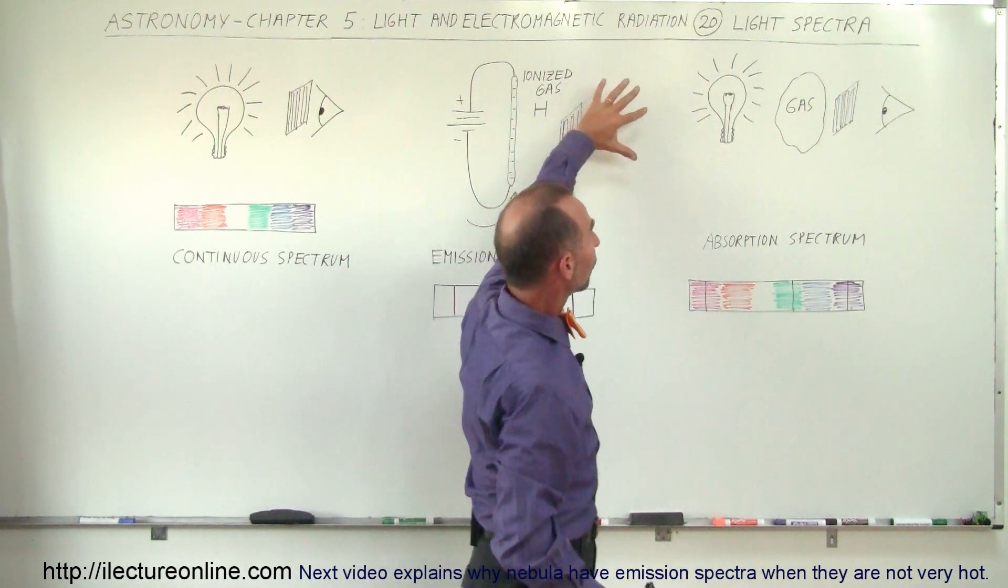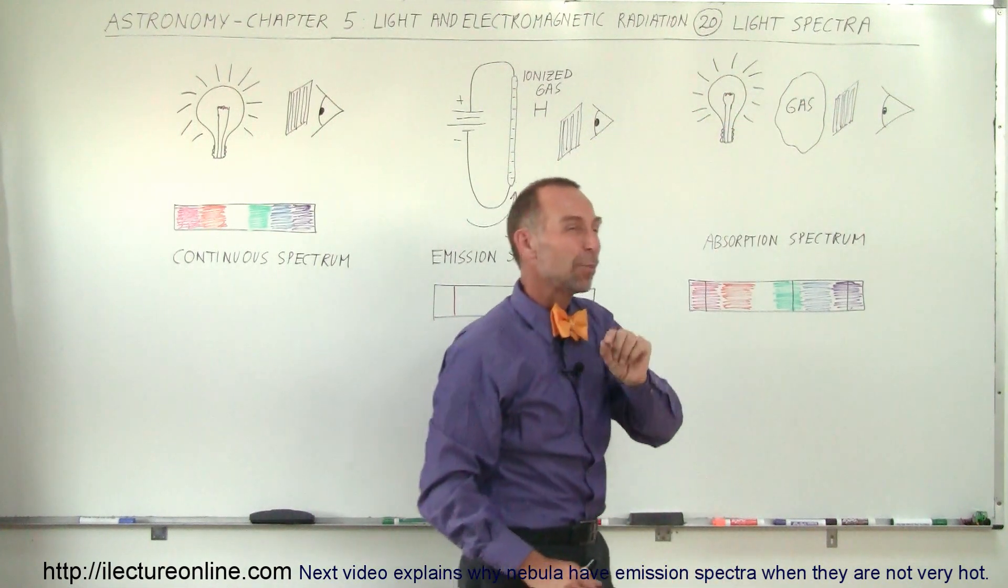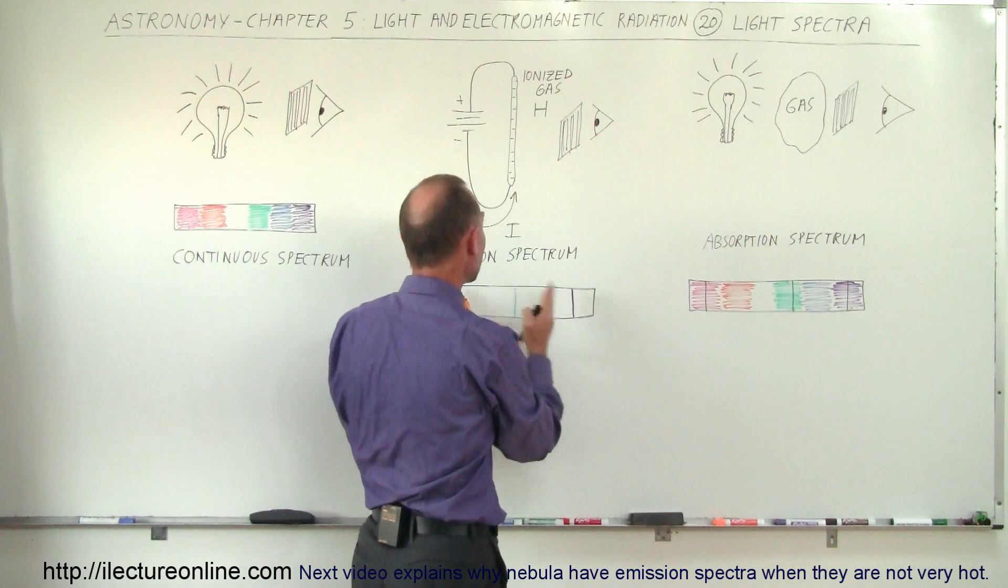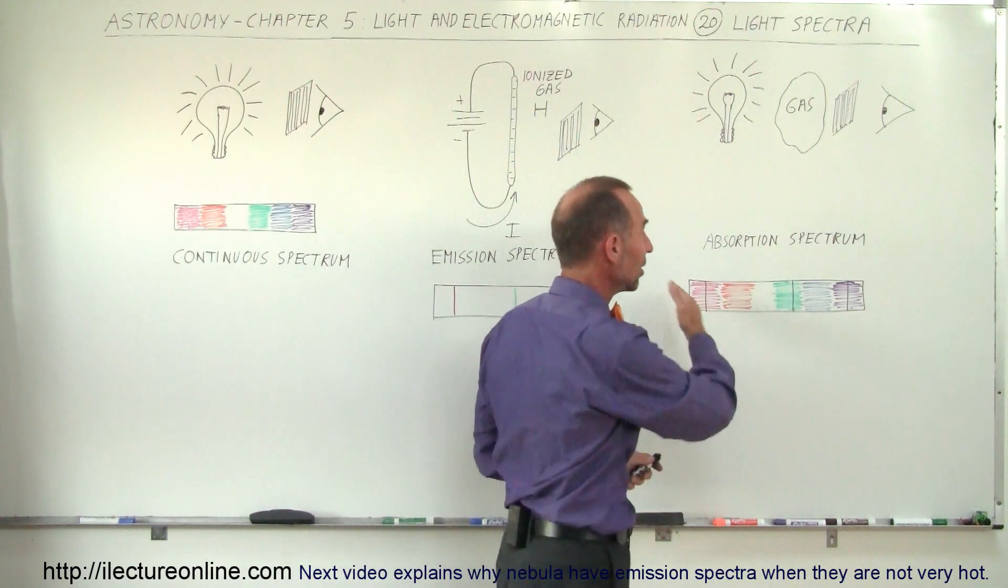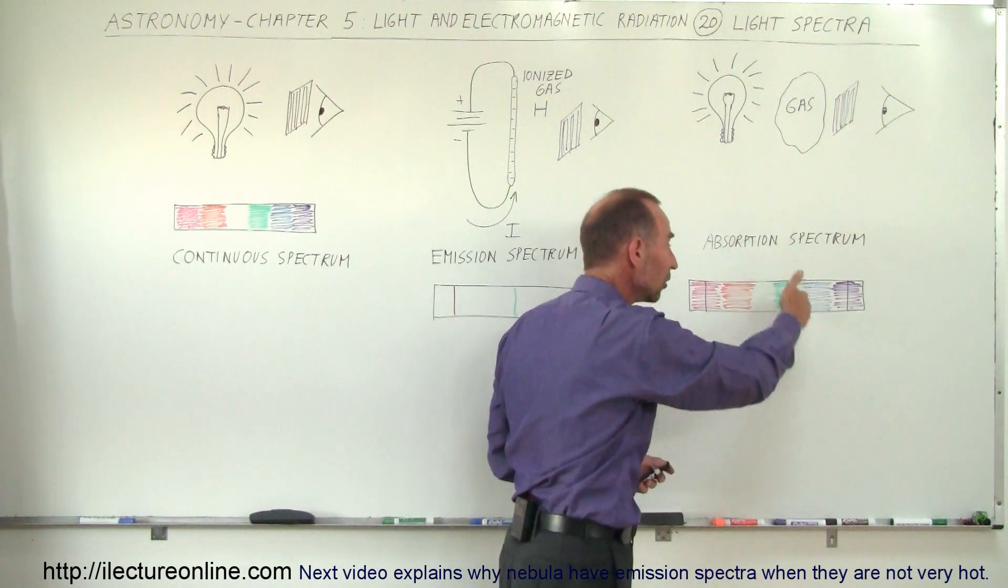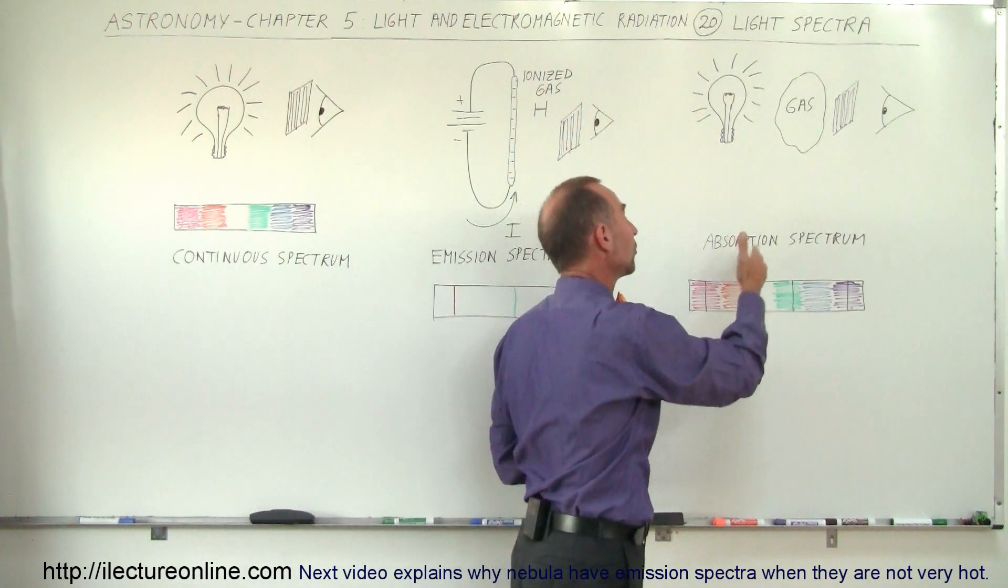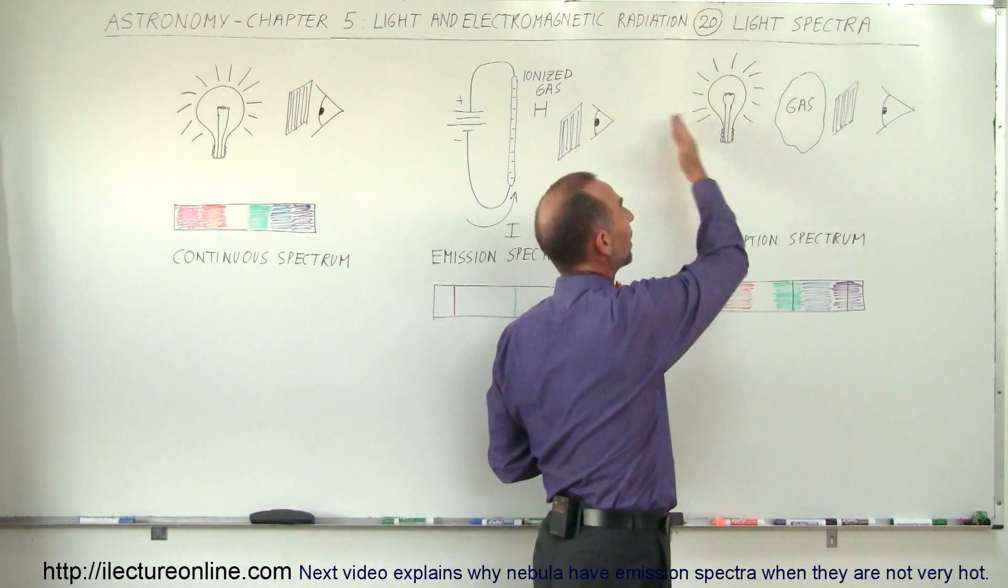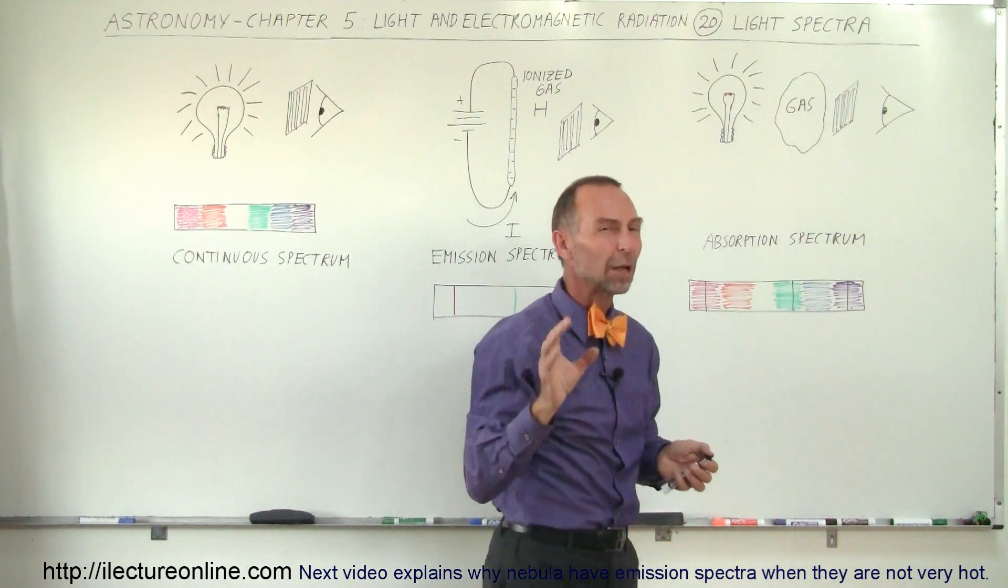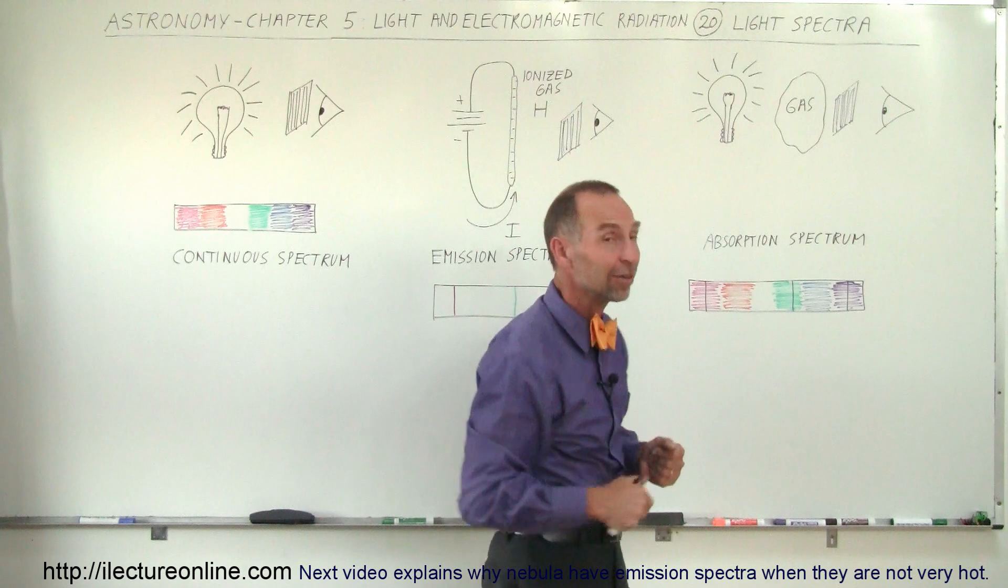As all the photons from the light bulb go through the gas, the ones that match up with the specific wavelengths or frequencies normally emitted by an ionized gas appear to be absorbed. So we see a continuous spectrum with certain colors missing, certain colors absorbed. We call that an absorption spectrum, and that happens when gases are absorbing the normal radiation flowing through them. That's something we'll see later when we talk about the Sun and the stars.